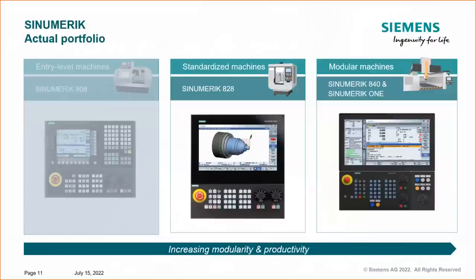Let's talk about which control platforms we're going to focus on. We have the Siemens 808, 828, 840D, and new to the block is Siemens One. We're not going to focus on the 808 entry-level; we'll focus on the 828 and 840D, and the Siemens One platform — standard machines and modular machines. If you have an 828, you're probably going to use probing a lot, as well as with Siemens One and 840D.